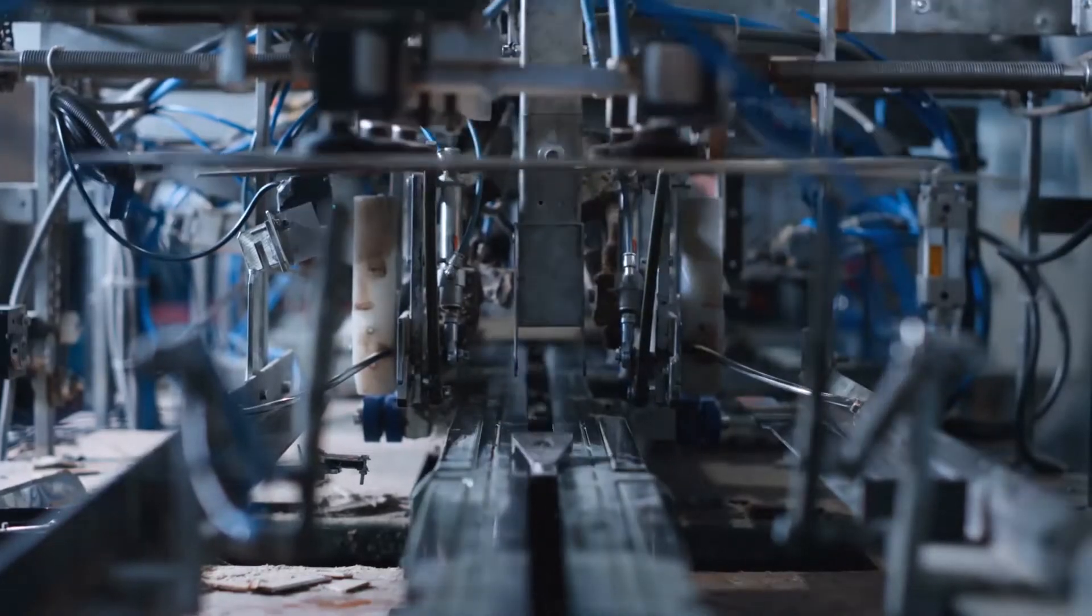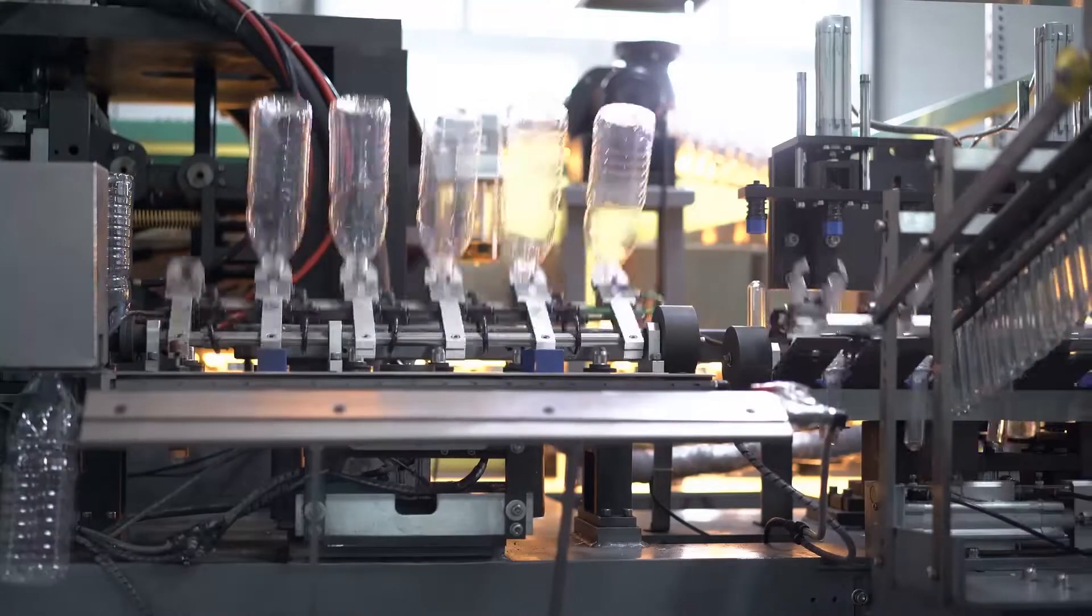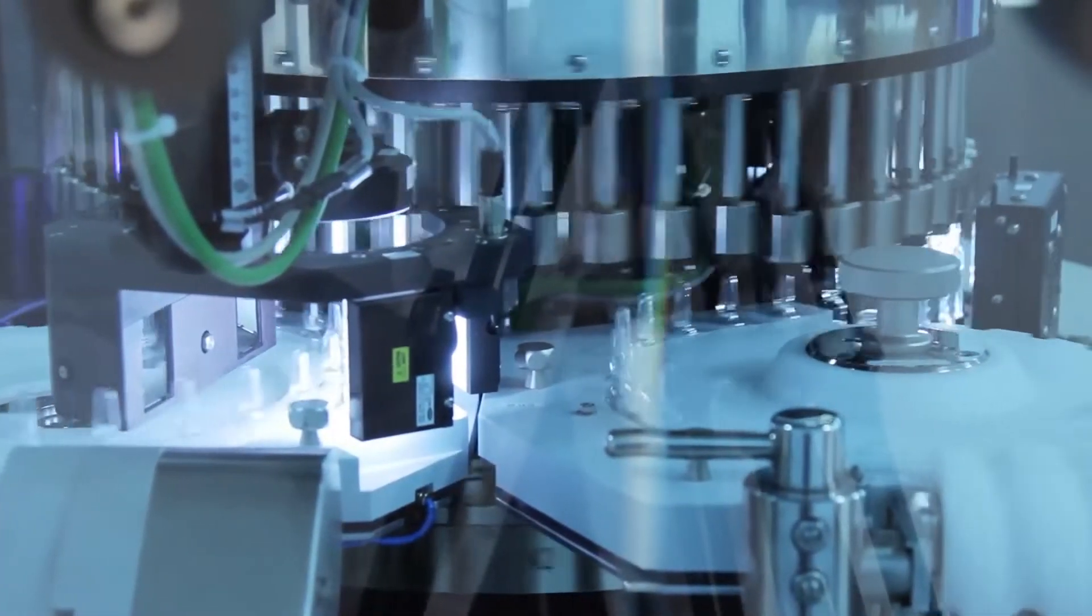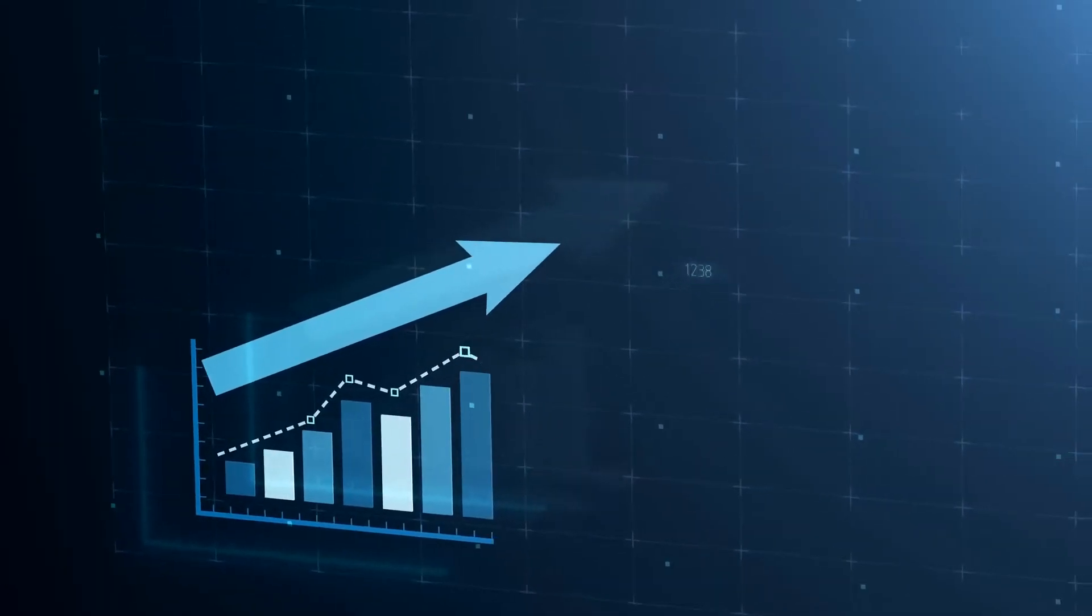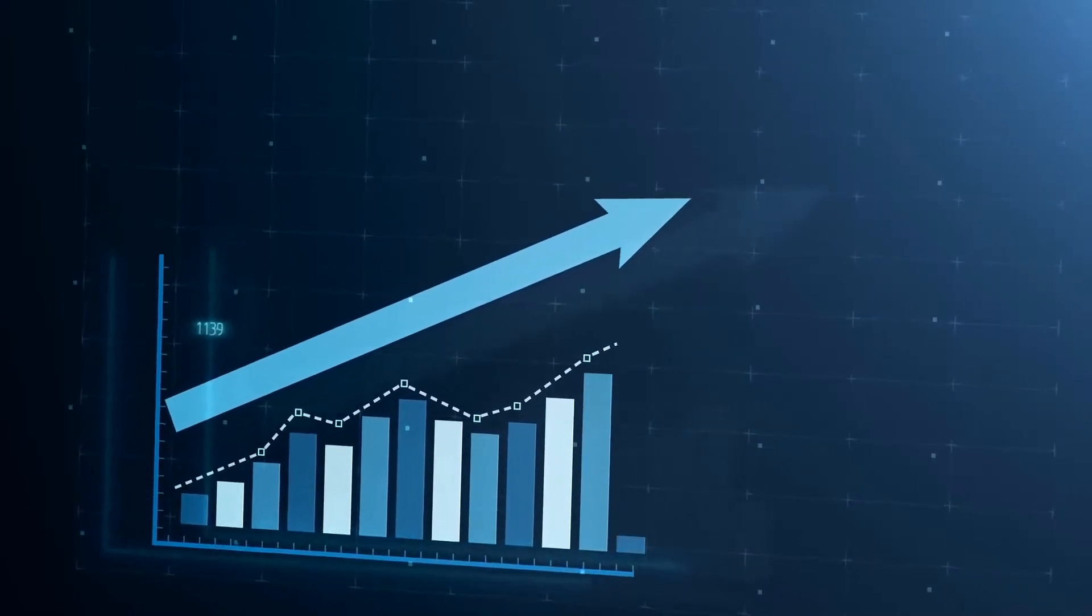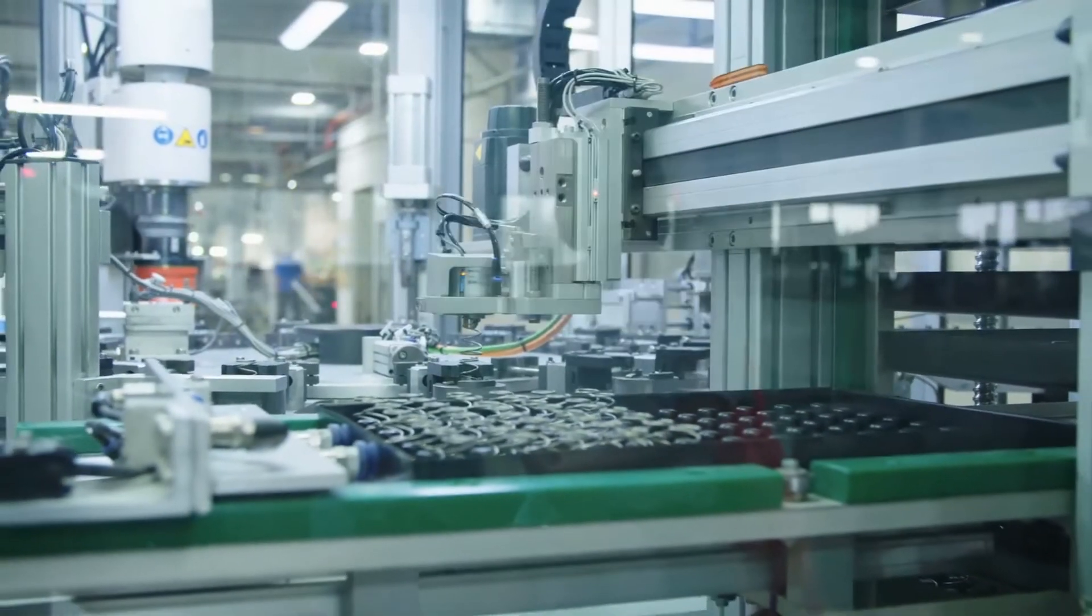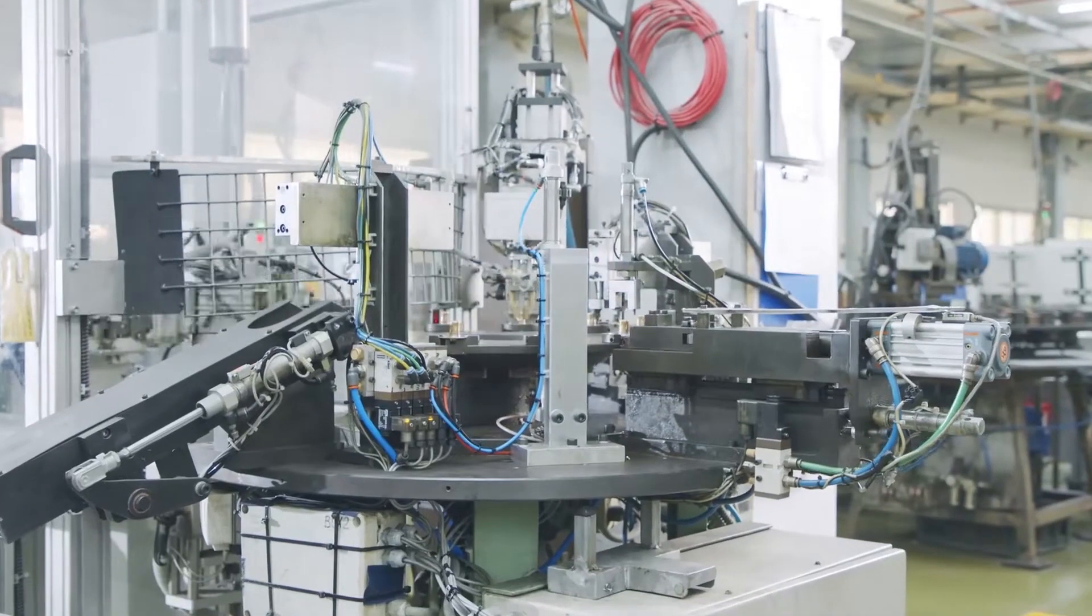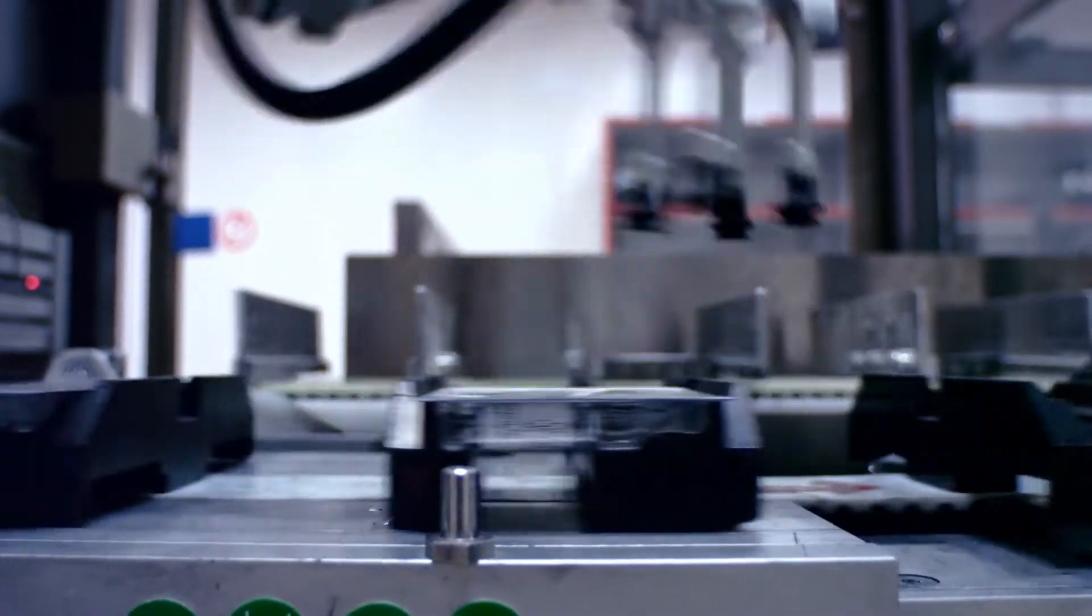According to the IFR, robot density, which is a measurement of the number of robots for every 10,000 employees in an industry, was 229 in the US in 2019. This number is 28% more than China's robot density, which is 187 robots for every 10,000 workers, but only a fraction of what it is in South Korea or 855 robots for every 10,000 workers.